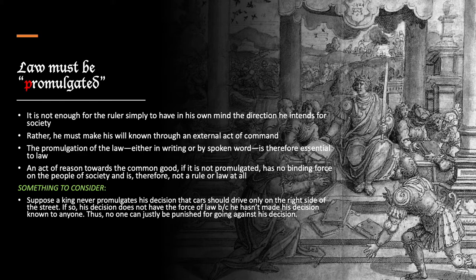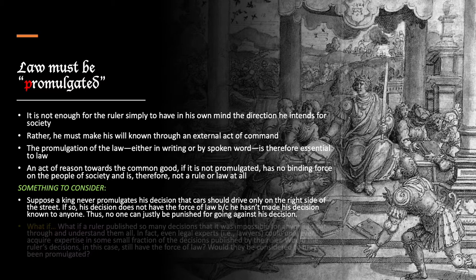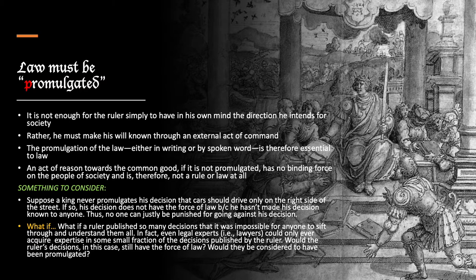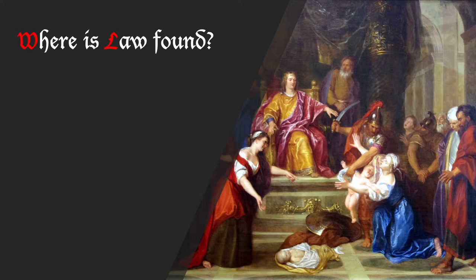This much is clear. But now consider another situation, which is a little trickier. What if a ruler published so many decisions that it was impossible for anyone to sift through and understand them all? In fact, even legal experts — lawyers — could only ever acquire expertise in some small fraction of the decisions published by the ruler. Would the ruler's decisions in that case still have the force of law? Would they be considered to have been promulgated or not? Now we've discussed the definition of law and looked more closely at the four aspects within that definition.